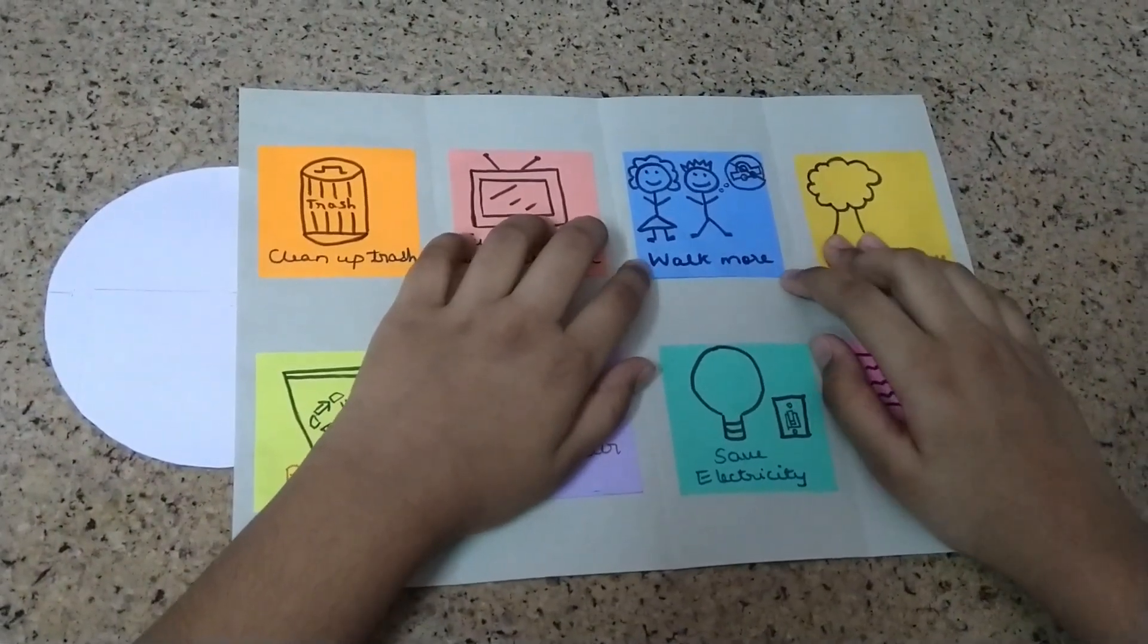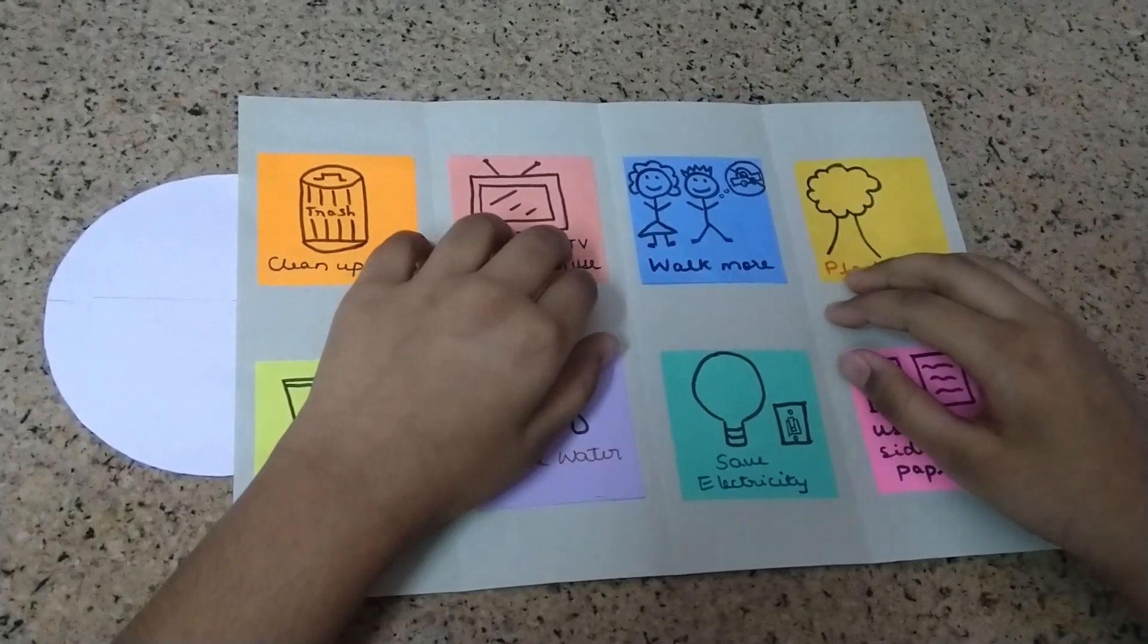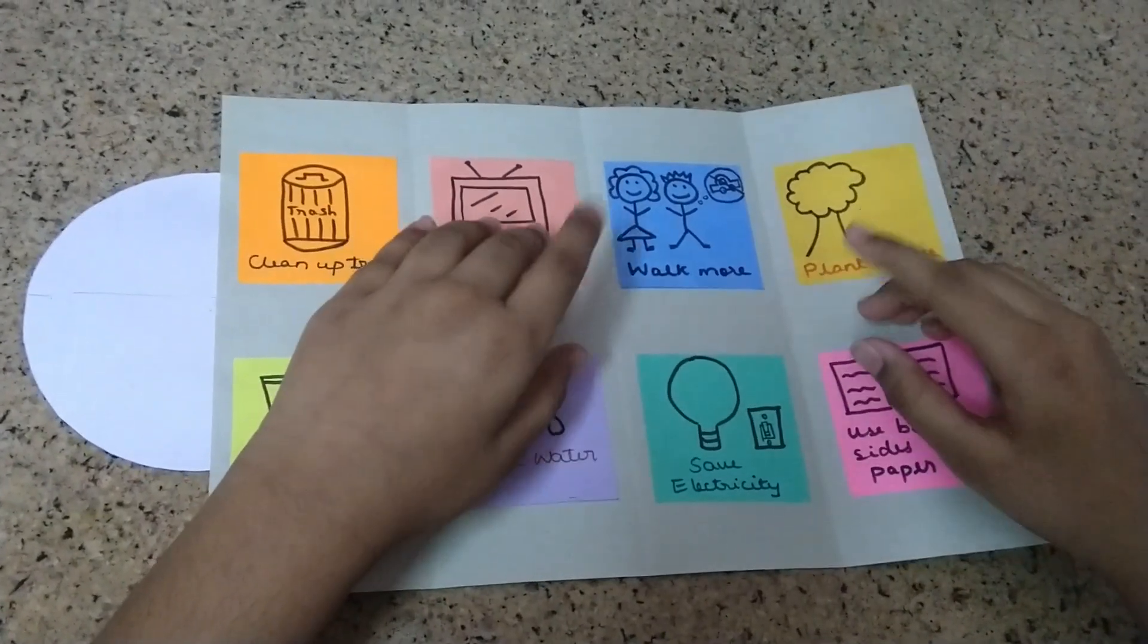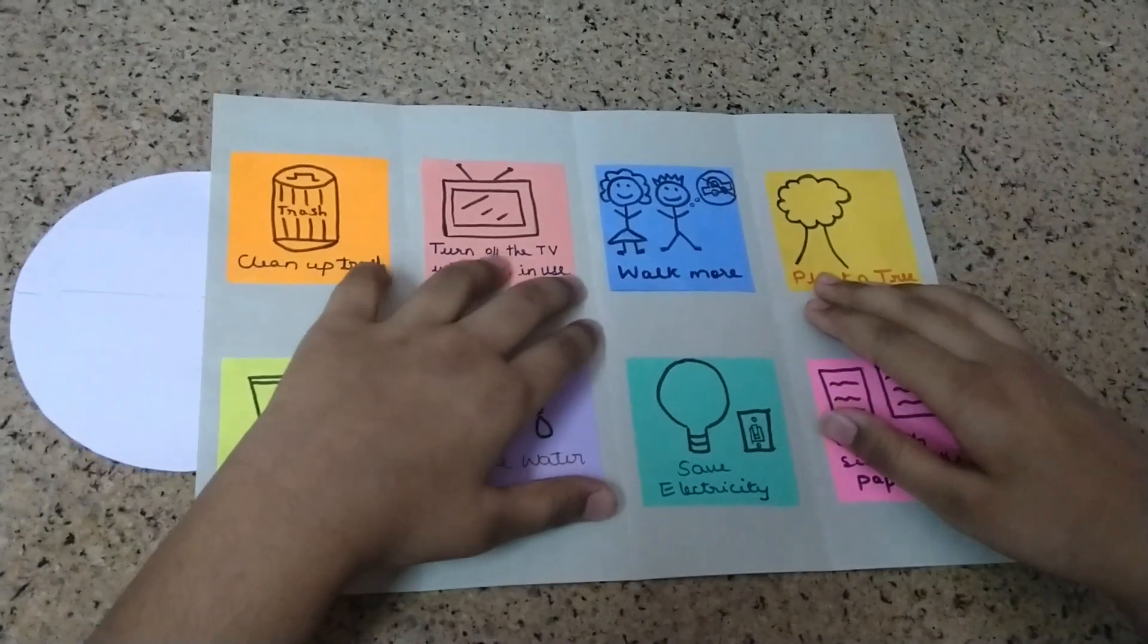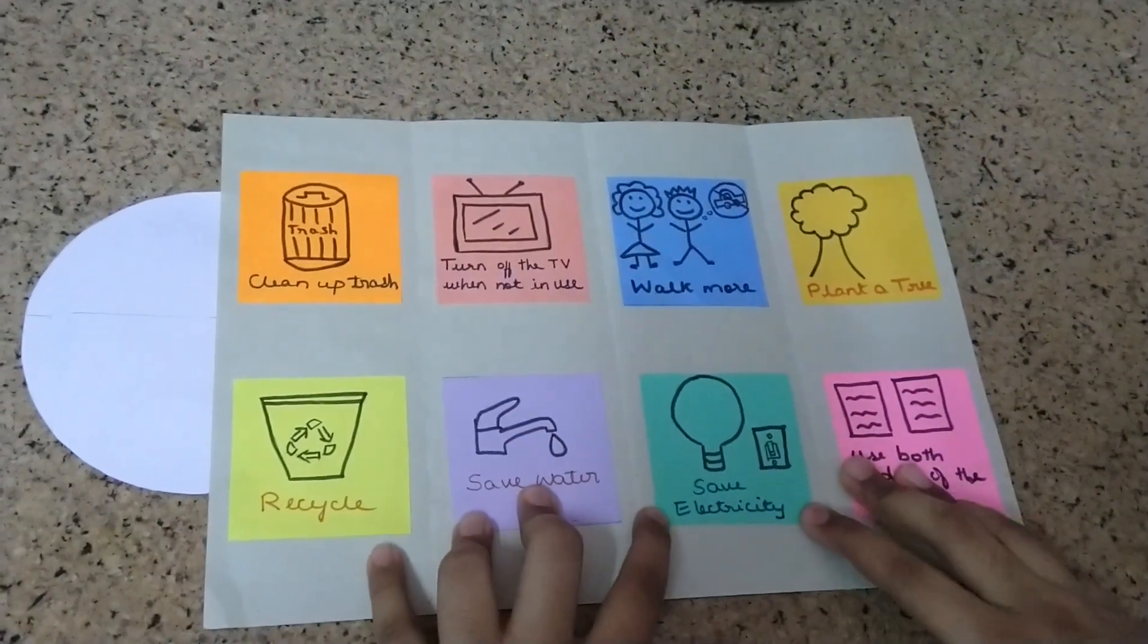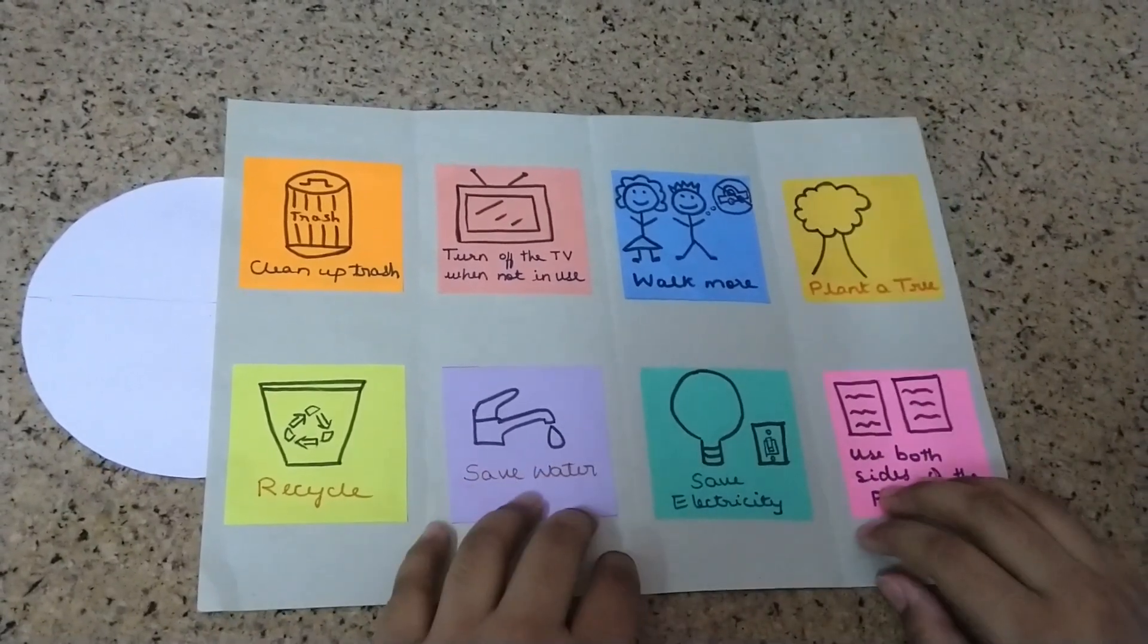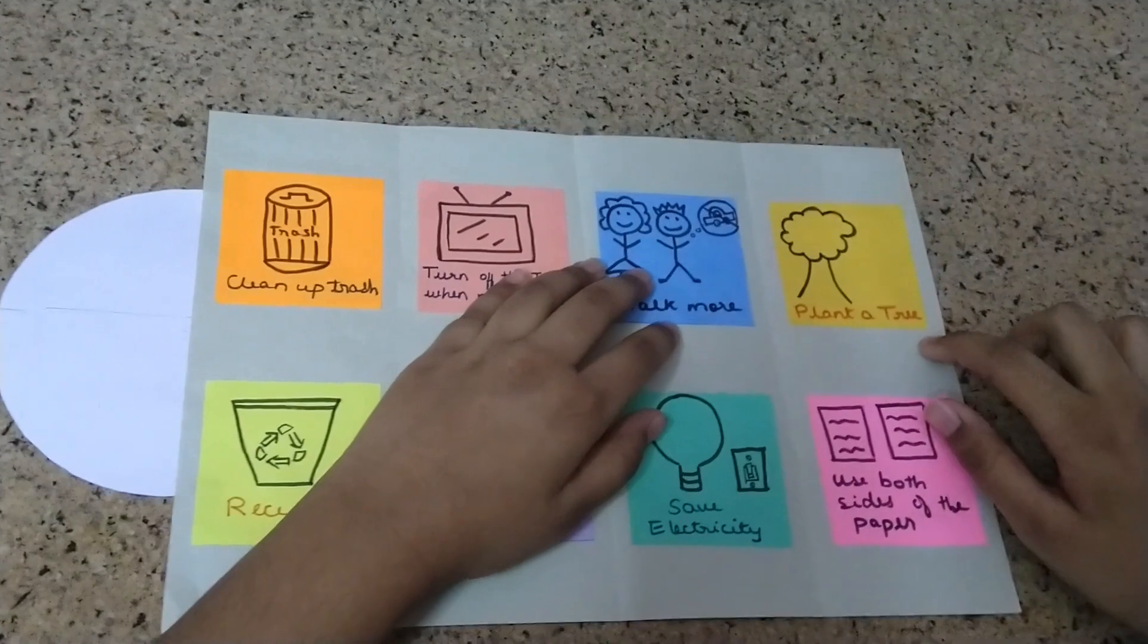The fifth point is walk more. We should walk rather than using vehicles because vehicles will pollute the air. We can also use bicycles. The sixth point is save electricity. Turn off the lights and fans when not in use.